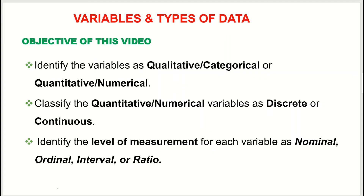Hello everyone, welcome to this video on variables and types of data. In this video we are going to: first, identify the variables as qualitative or categorical and numerical or quantitative; second, classify the numerical or quantitative variables as discrete or continuous; and third, identify the level of measurement for each variable as nominal, ordinal, interval, or ratio.